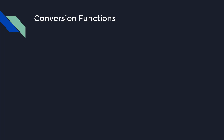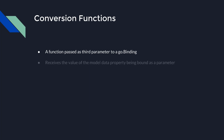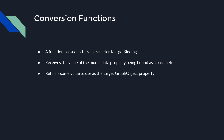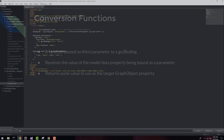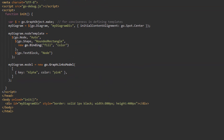Data bindings can also be more complex, using something called a conversion function. A conversion function is a function that is passed as a third parameter to the binding constructor. The conversion function is passed the value of the model data property specified in the second binding constructor parameter. Inside the conversion function, some computation occurs, and whatever value is returned is used to set the graph object property the binding is affecting. As a simple example, we'll still bind shape fill to model data color, but this time, instead of strings, the color model data property will be a number, either 0 or 1.